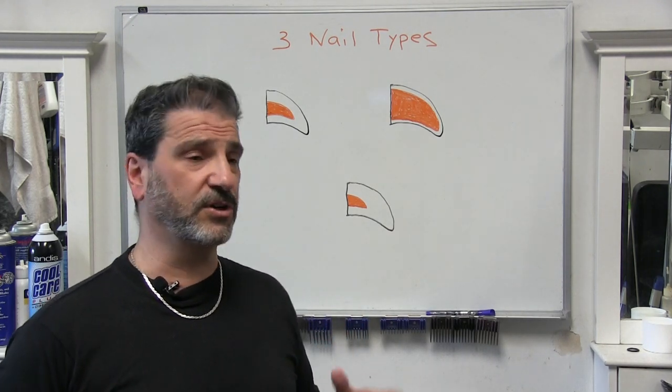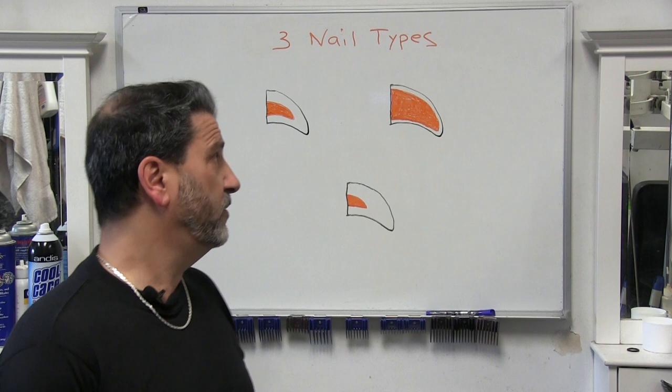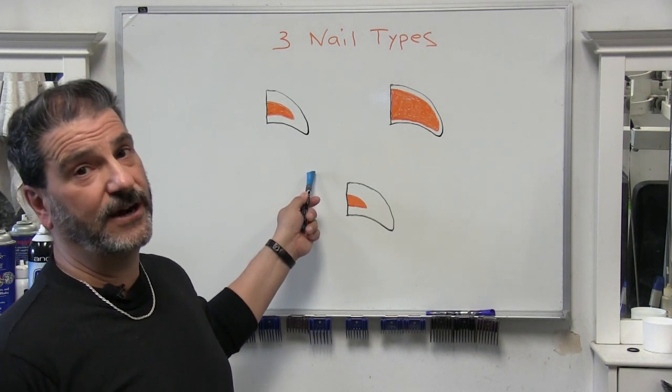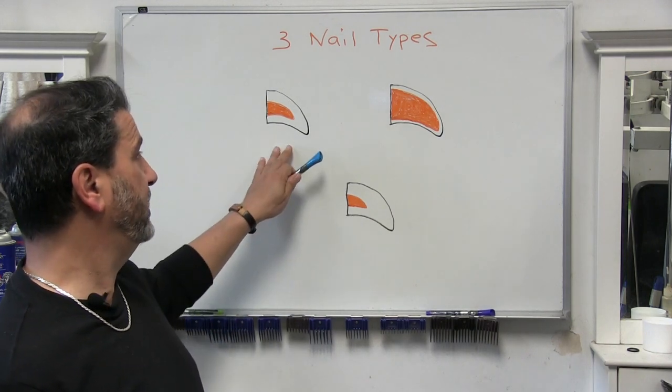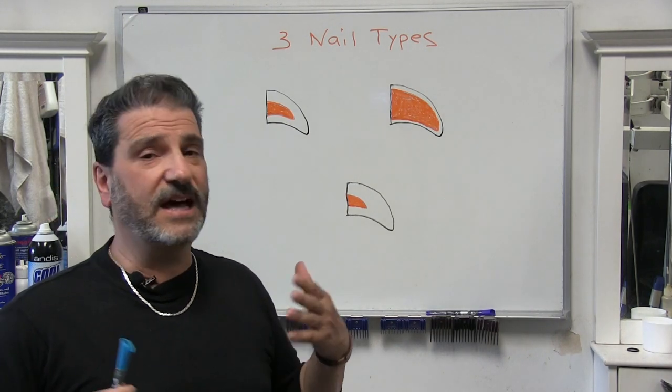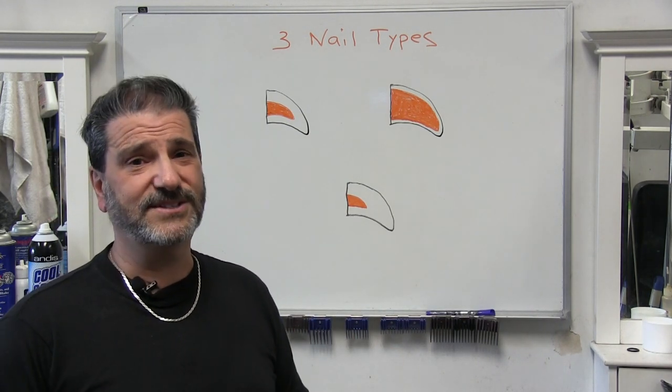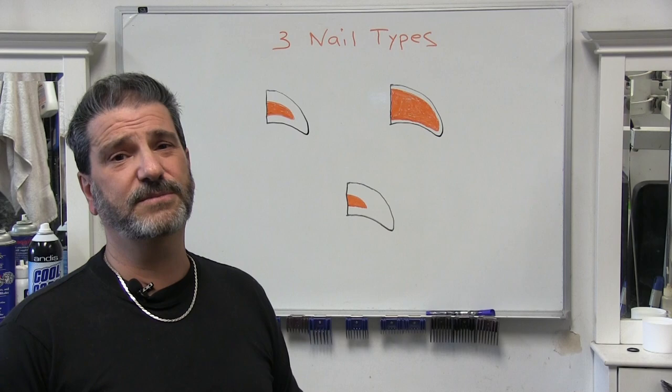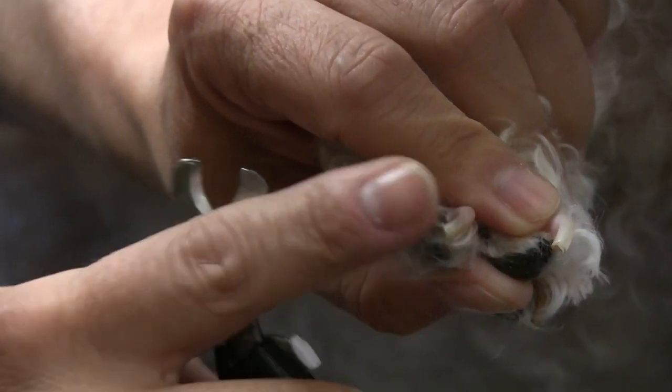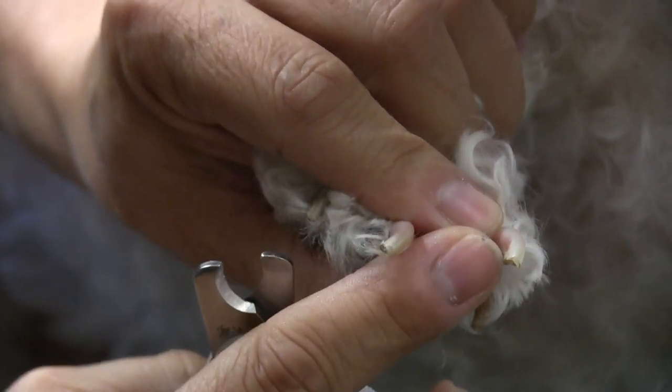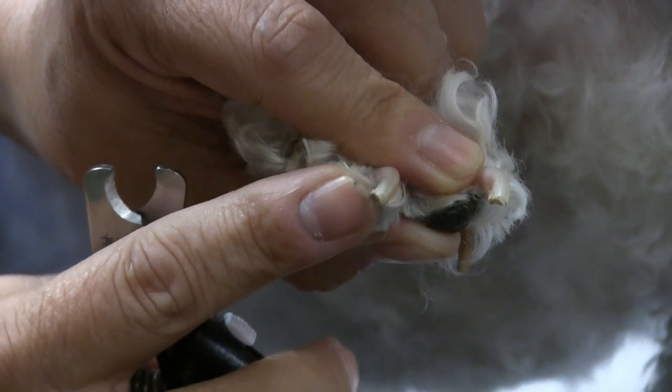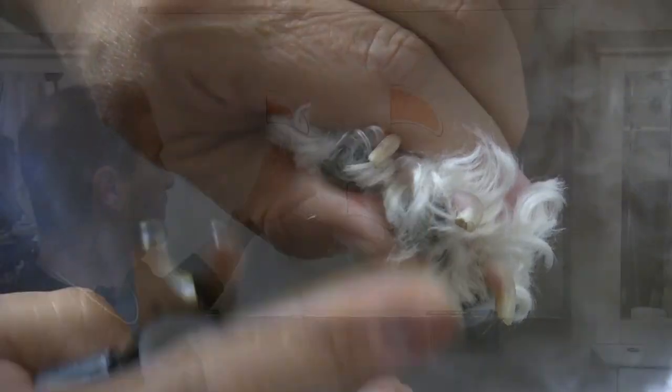So the first one we're going to talk about is what we're going to refer to as the average nail. So this nail is basically the average nail you might find this in a lot of mixed breeds, your shepherd mixes, your border collie mixes, even your poodles, your bichons, your shih tzus. But when we say average nail, we mean that the vein isn't too far out or it's not too tucked back into the nail shaft here.